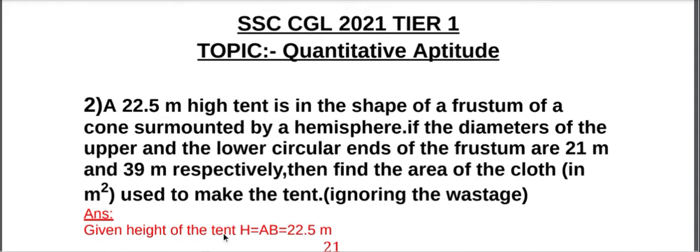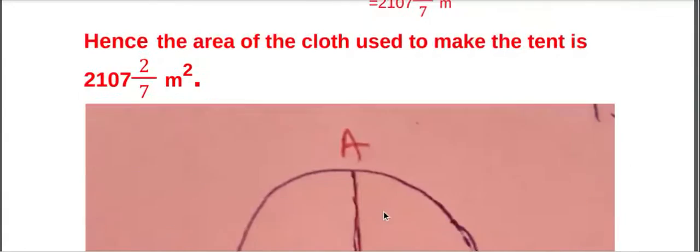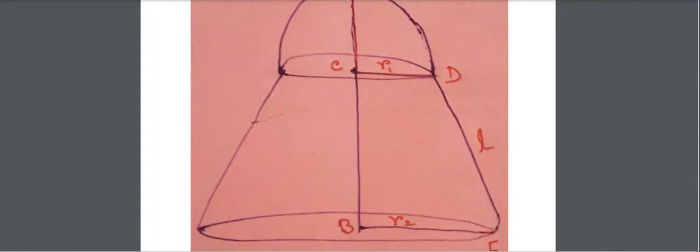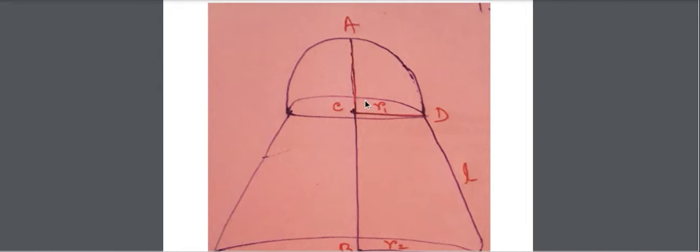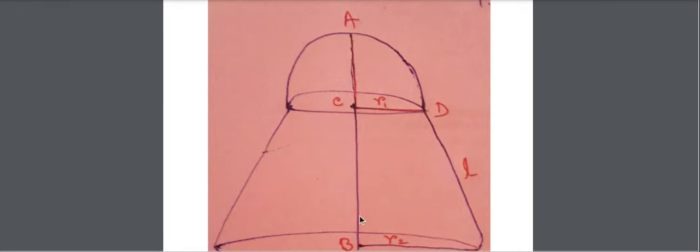Given: height of the tent AB = 22.5 meter. From the figure, BC is the height of the frustum, and AB is the total height of the tent.